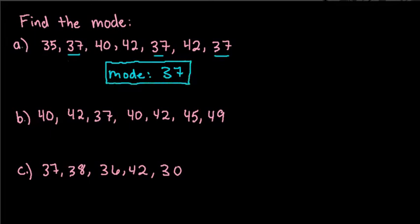For the second one we have the data values 40, 42, 37, 40, 42, 45, 49. And you can see that both 40 and 42 occur the same amount of time. So this one would have two modes. So the mode of the data would be 40 and 42.